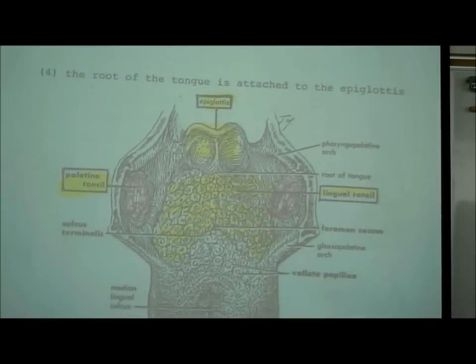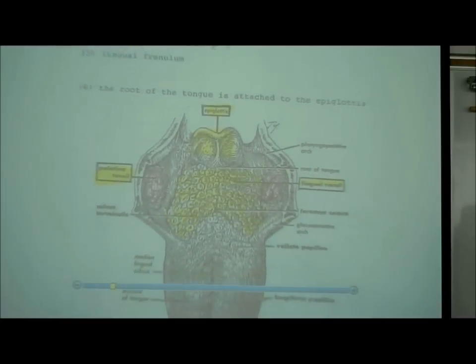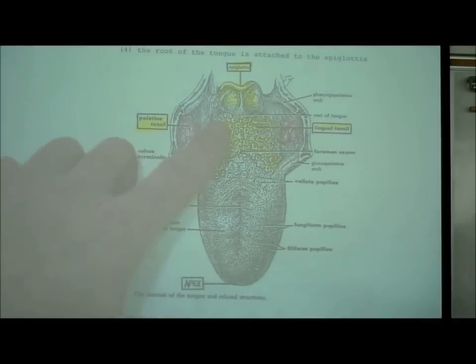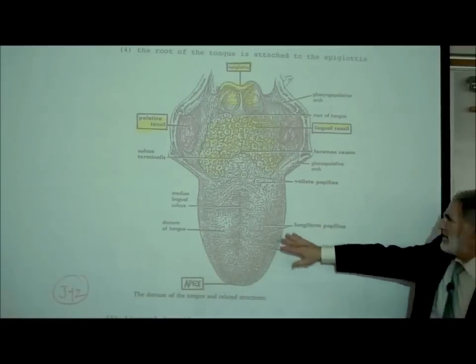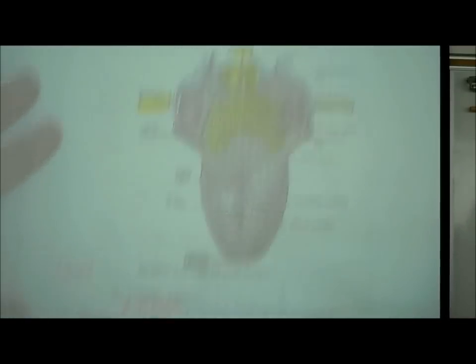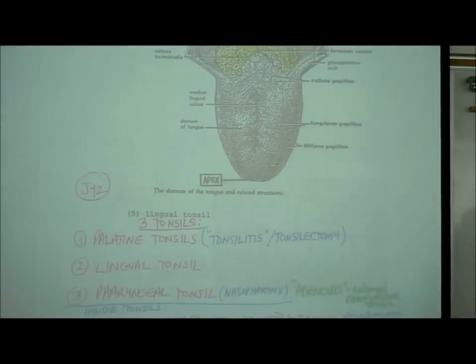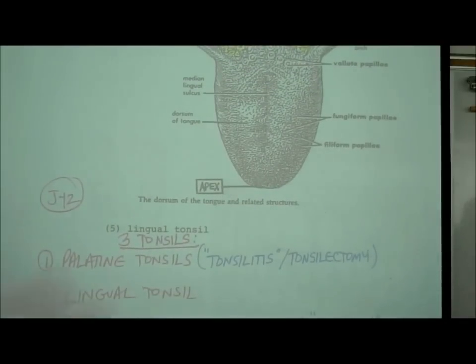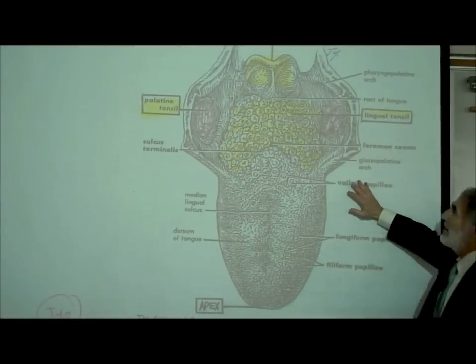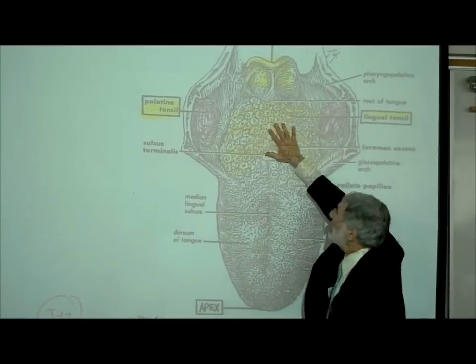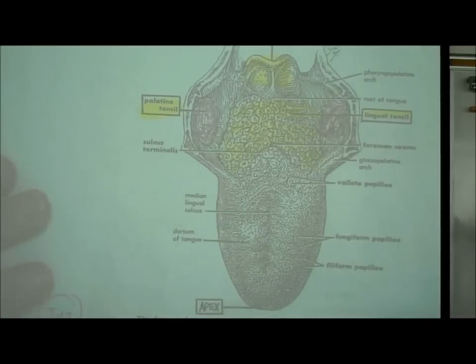Back on J12, the root of the tongue is attached to the epiglottis. Looking at the tongue, the tip is called the apex — apex or apical means tip. On this picture, there are the palatine tonsils on the sides, and another tonsil covering the top back surface of the tongue called the lingual tonsil.